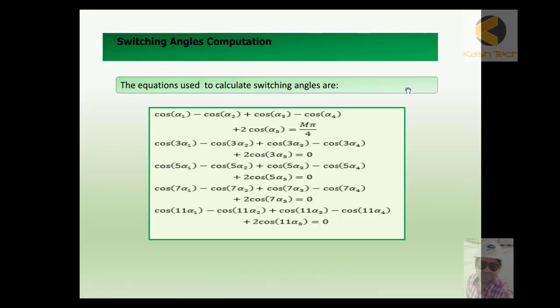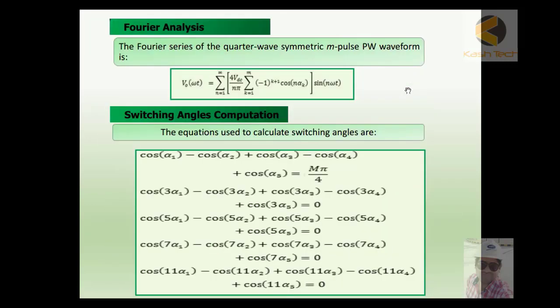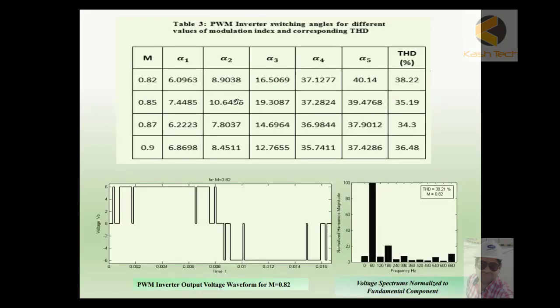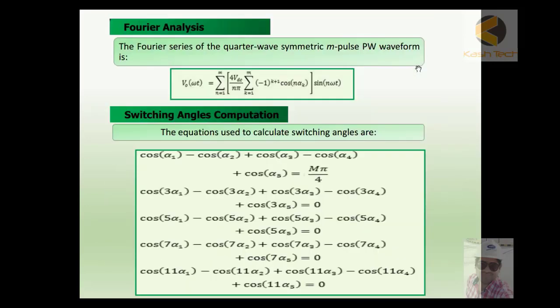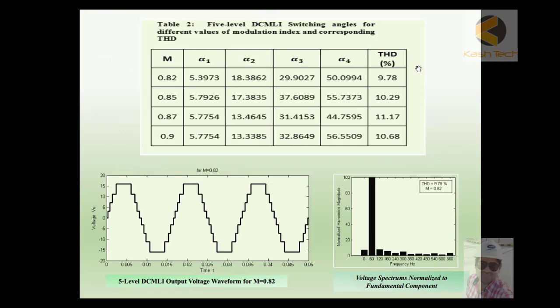Let us see our previous equation. This is THD for PWM alone and you can see this is the THD for DCMLI alone. This value is 9.78% and this is for basically four levels. If you are keeping on increasing the levels of DCMLI, then error will reduce.